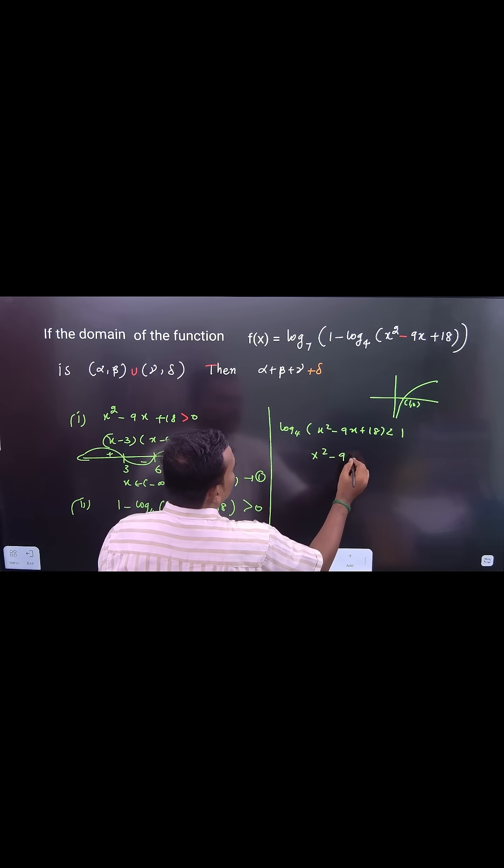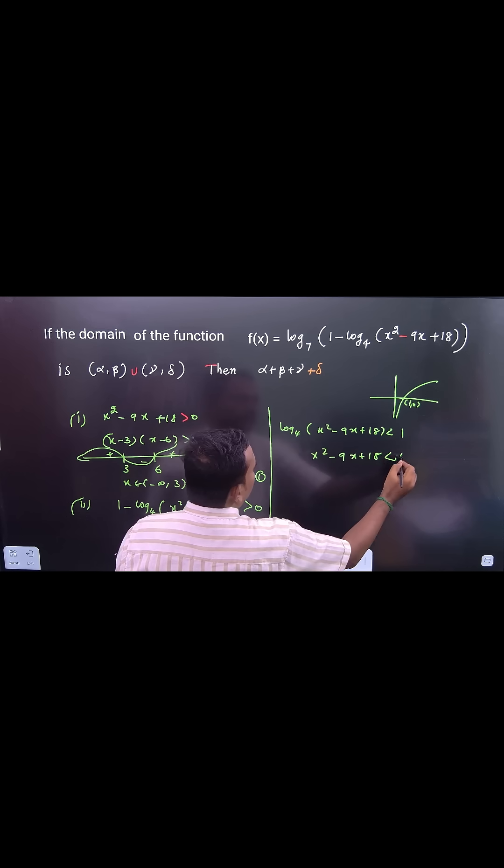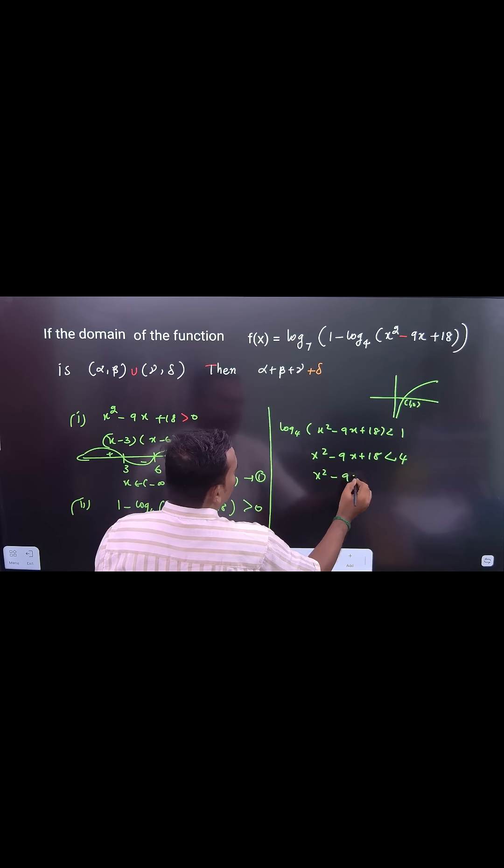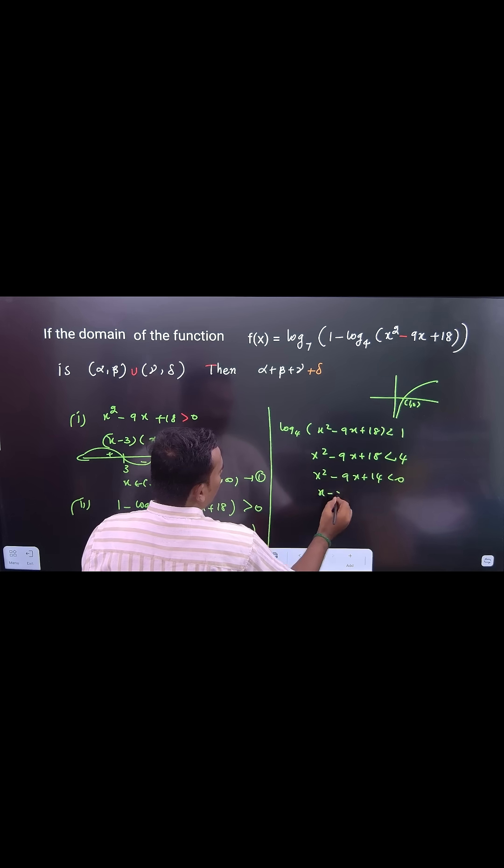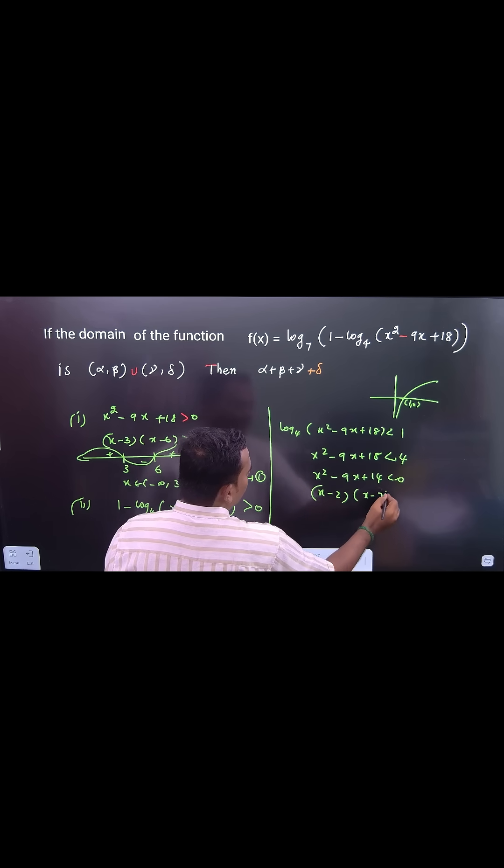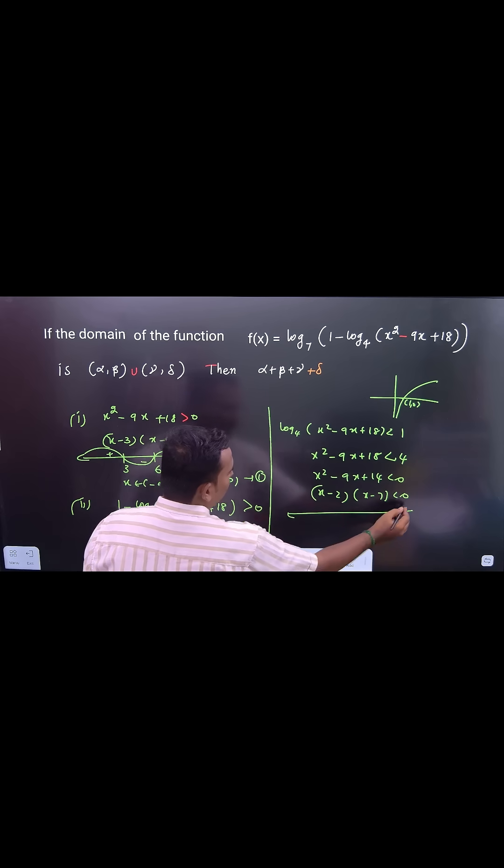x² - 9x + 18 is less than 4. x² - 9x + 14 is less than 0. That means (x - 2)(x - 7) is less than 0. You can use the wavy curve method.